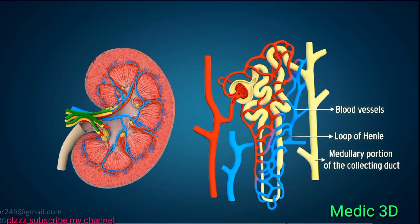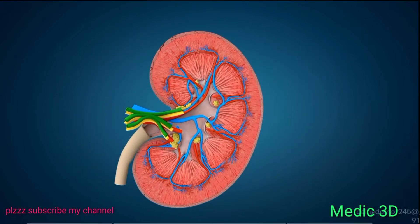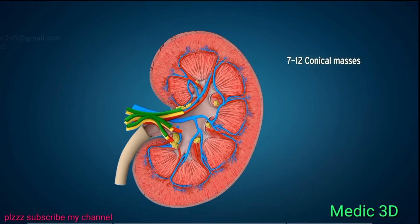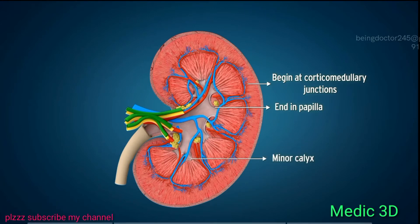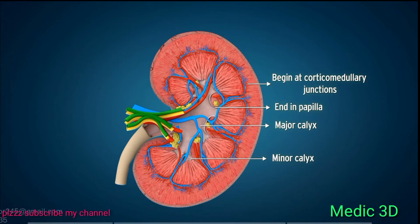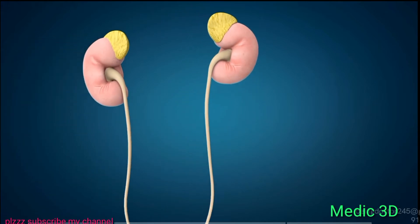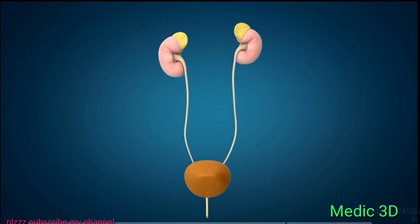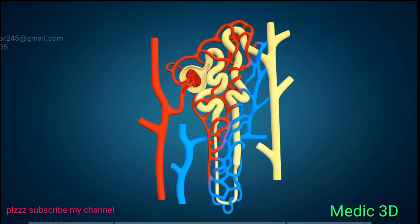The medulla is divided into 7 to 12 conical masses that appear in a radiating pattern, called the renal pyramids. Medullary pyramids begin at the corticomedullary junctions and end in a papilla, which is found within the minor calyx. Minor calyces unite to form the major calyx. The major calyces open into the renal pelvis, which is the upper expanded portion of the ureter. The ureters exit from the hilum of each kidney and pass to the bladder.